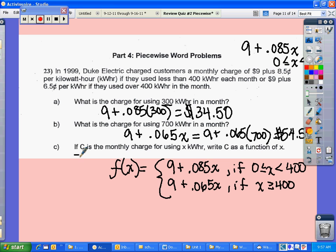So when it says if C is the monthly charge, write C as a function of X. That's what they mean. They want you to write it out as a piecewise function. It just doesn't say write a piecewise function. That's what it means when it says that.